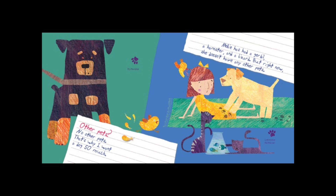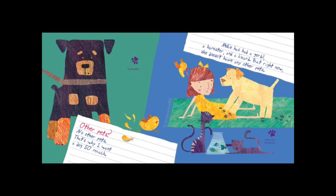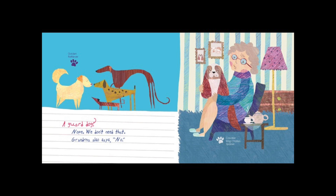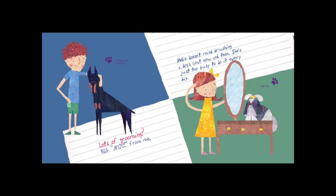Other pets? No other pets — that's why I want a dog so much. Mellie has had a gerbil, a hamster, and a lizard, but right now she doesn't have any other pets. Easy to train? Yes, of course — I have lots of tricks to teach him. Mellie wants a dog to do sit and stay, that's all. A guard dog? Nope, we don't need that. Lots of grooming? Big no from me. Mellie doesn't mind brushing a dog's coat now and then, but she's too busy to do it every day.